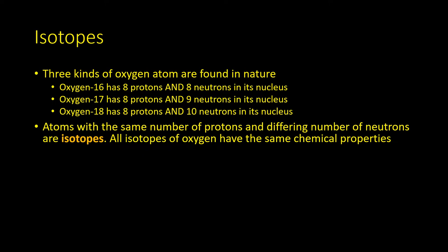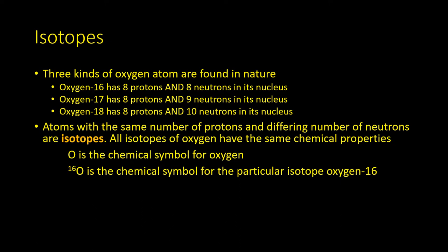When we want to distinguish between isotopes, we use a little number which tells us the atomic weight—that's the number of protons and neutrons added together in the nucleus. So 16O is the chemical symbol for a particular isotope of oxygen, oxygen-16.